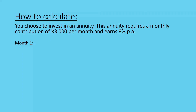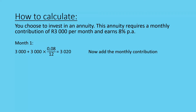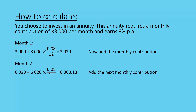Taking a look at the very first month: we take 3,000 Rand and we add 3,000 times 0.08, the 8% divided by 12, which will give me the closing balance for the first month. Now, we add the monthly contribution to get to month 2. At month 2, instead of starting with 3,020, we start with 6,020, because you've put in a monthly contribution of 3,000 Rand.